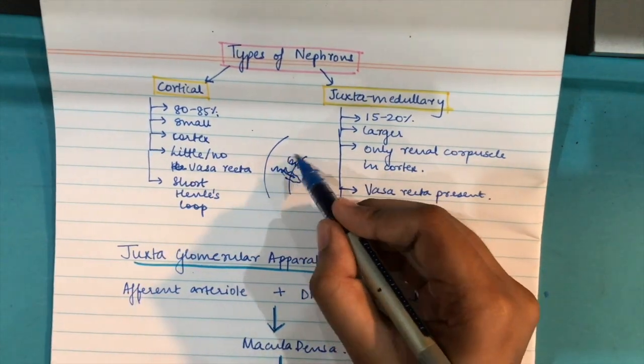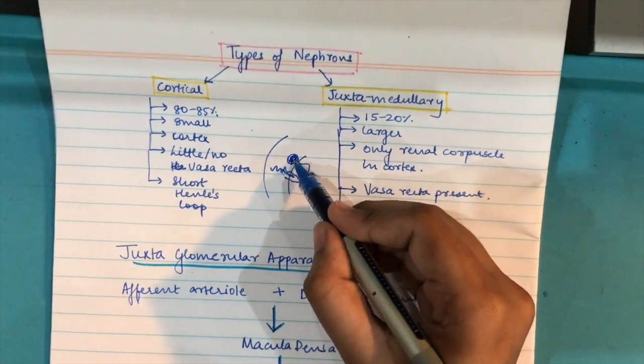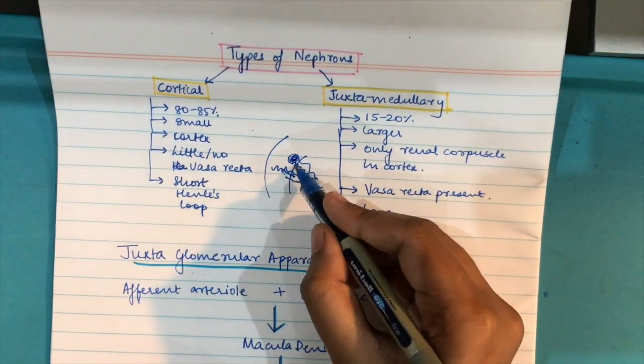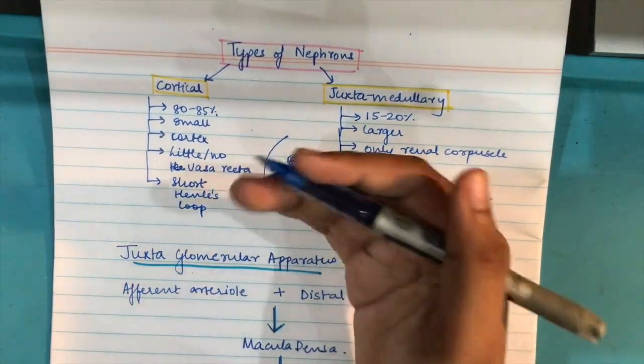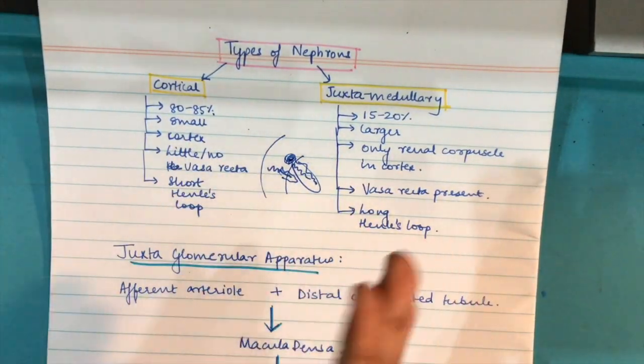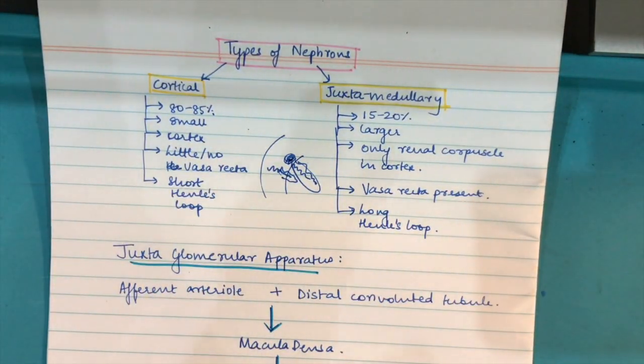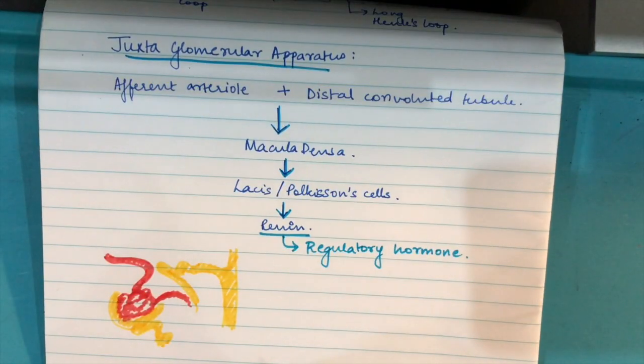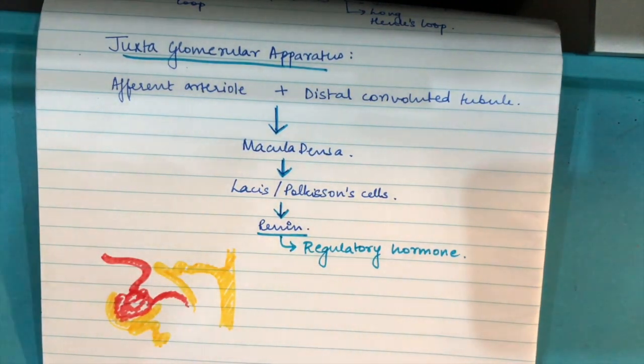Juxtamedullary has a long deep vasa recta which moves over here and it has a very short Henley's loop in cortical nephrons. Henley's loop only extends up till the medulla. But in juxtamedullary what happens is this part, the renal corpuscle is present in the cortex but the entire tubule, that is the entire Henley's loop, is present in the medulla. So it has very long medulla, I mean Henley's loop, as compared to cortical.